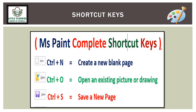Here are some shortcut keys for MSPaint: Control + N is used to create a new blank page; Control + O is used to open an existing file or picture; and Control + S is used to save your page or document.